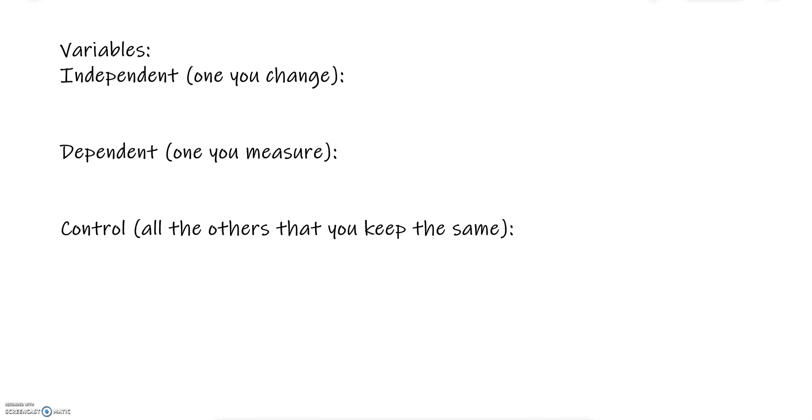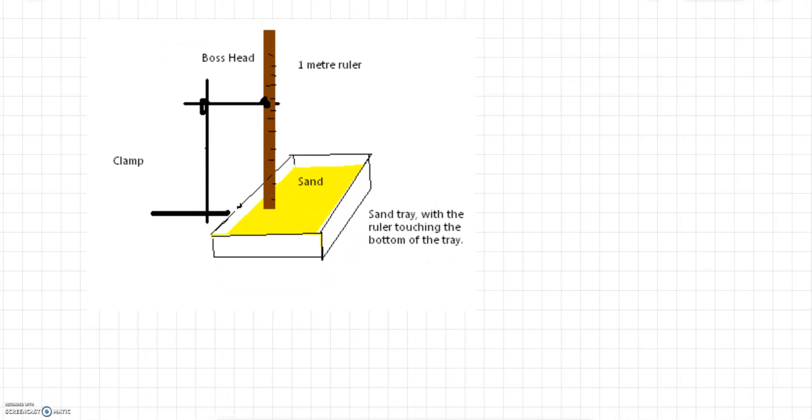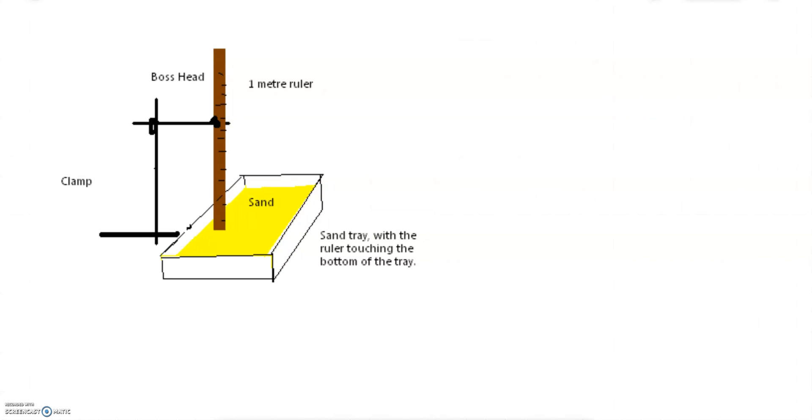So when we think about this experiment, it's going to look something like this with a number of different variables. For example, we could have the mass of the ball, the size of the ball. Now size is a bit vague so let's be specific, the diameter. Remember, always be really specific.